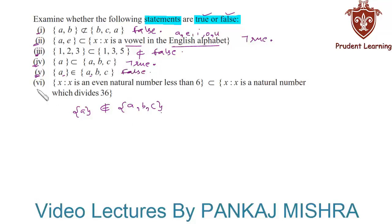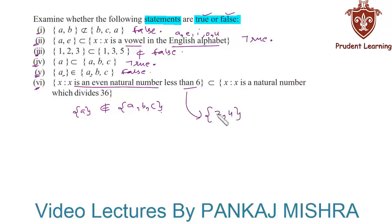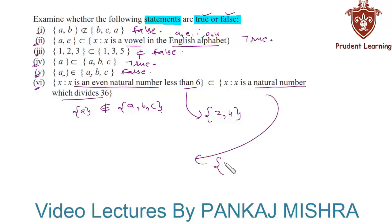In the last section, the first set is defined as x such that x is an even natural number less than 6. In roster form, this gives two elements: 2 and 4, since only 2 and 4 are even natural numbers less than 6. The second set is x such that x is a natural number which divides 36, and we can write all natural numbers dividing 36.